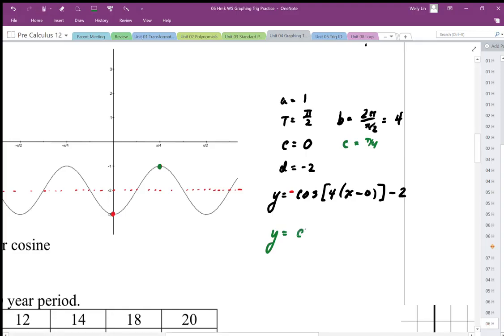I could use the pi over four as my starting position. So I end up with four x minus pi over four, and then minus two. So that would be if my starting position was up here, that's a positive cosine. If I choose to use this bottom position, which gives me a nice zero shift here, I would use a negative cosine.